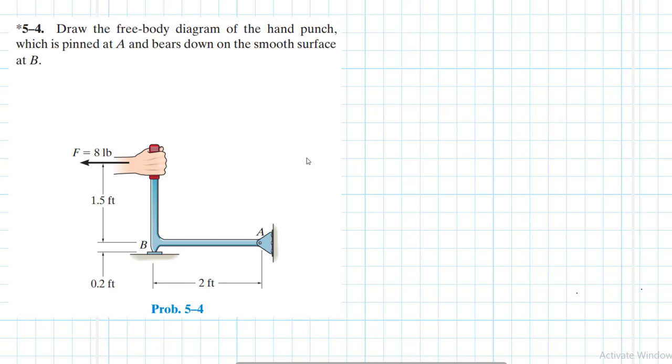Hello, I welcome you all. The problem reads: draw the free body diagram of the hand punch which is pinned at A and bears down on the smooth surface at B.